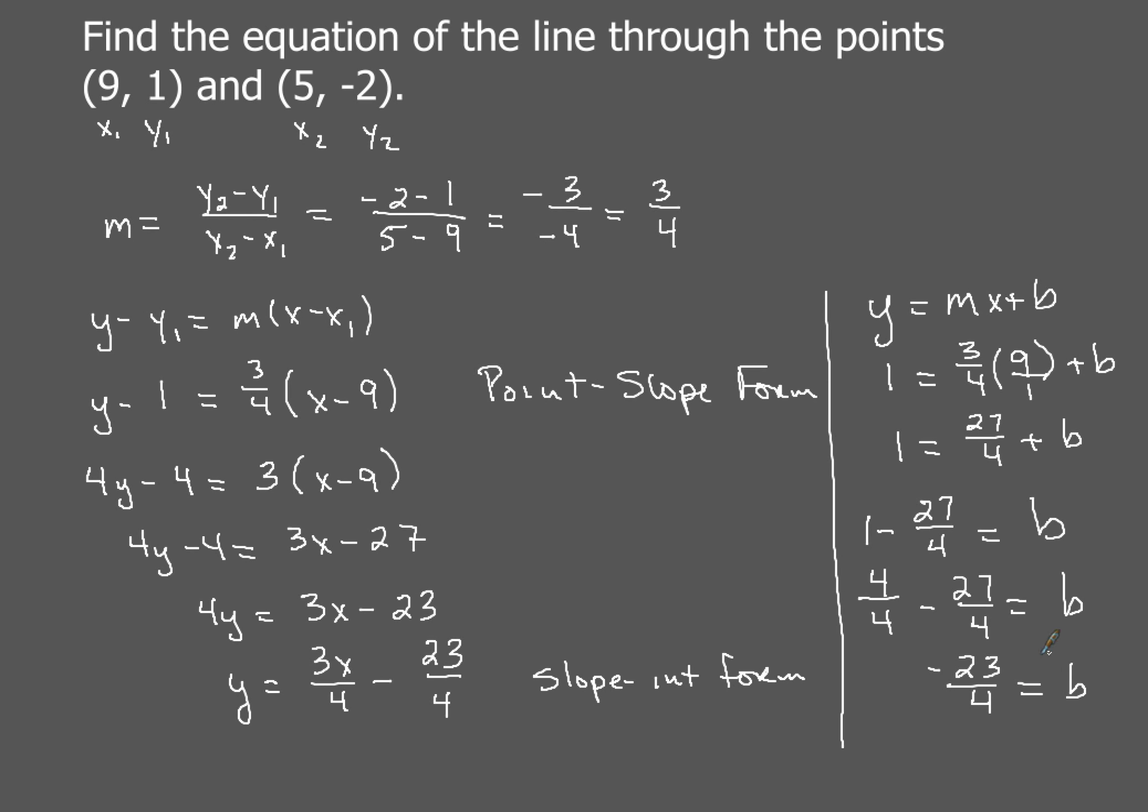So that's going to be my b value. So if I wanted to rewrite this in mx plus b form, that's slope-intercept form of line, I just found the value of b. So I've got negative 3 fourths x and a minus 23 over 4, which, if I did it the other way, is the same thing I got.